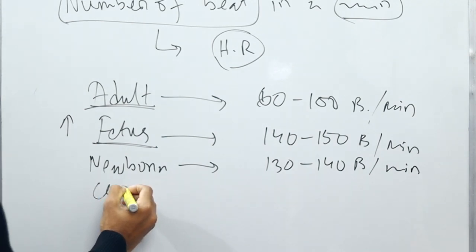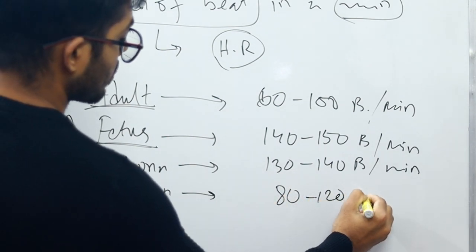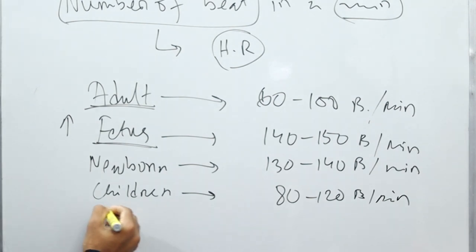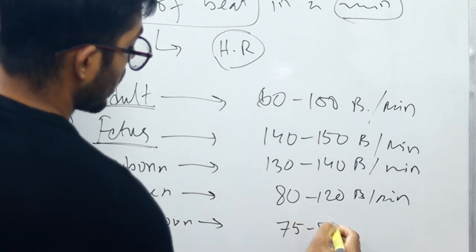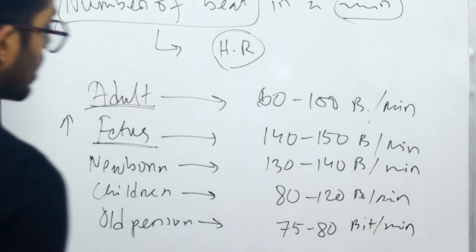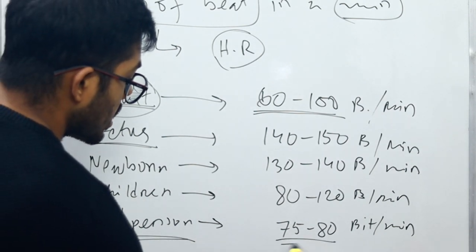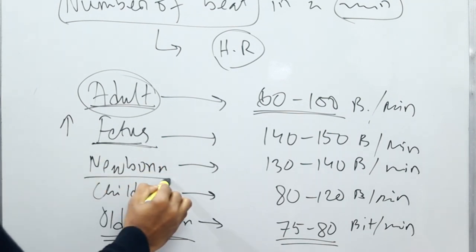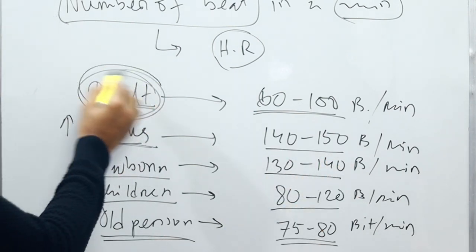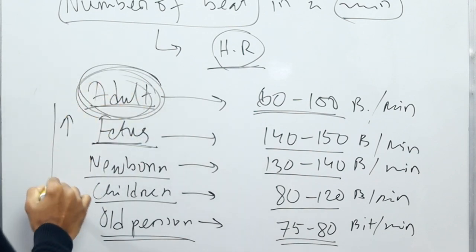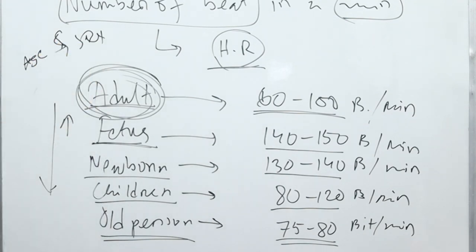In case of children, heart rate is 80 to 120 beats per minute. In case of an old person, heart rate is 75 to 80 beats per minute. So to summarize: adult is 60 to 100, old person is 75 to 80, children is 80 to 120, newborn is 130 to 140, and fetus is 140 to 150. This is the difference in heart rate by age.